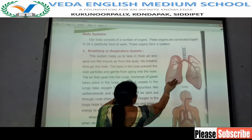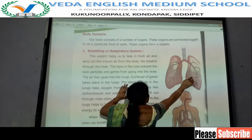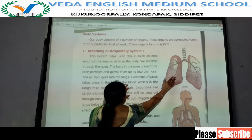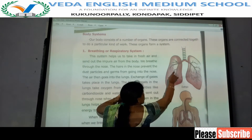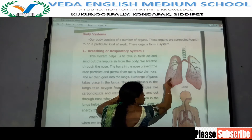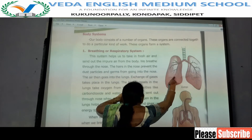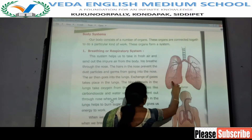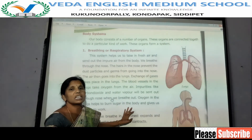The exchange of gases takes place in the lungs. Blood vessels present in the lungs take oxygen from the air entering through the nose. Oxygen is taken up by these blood vessels. Then impurities like carbon dioxide and water vapour are sent out through the nose when we breathe out.